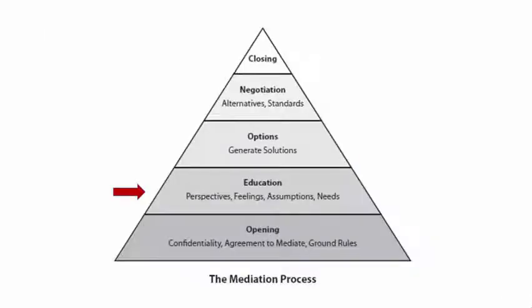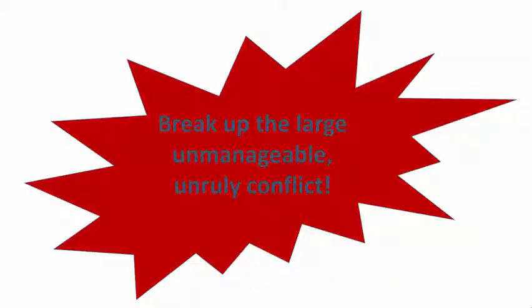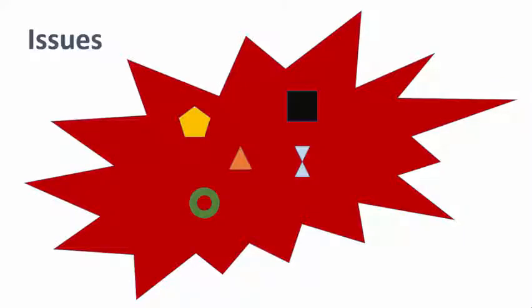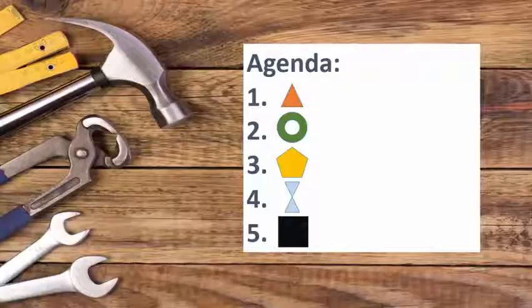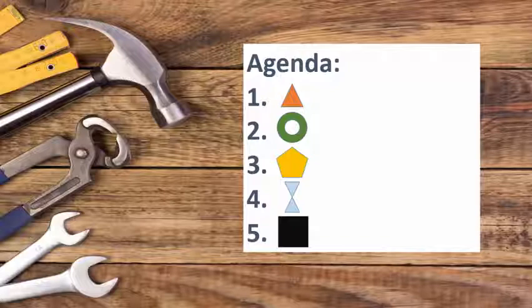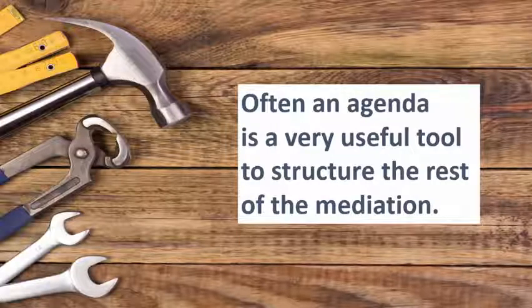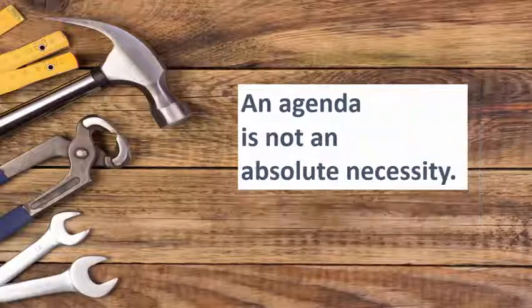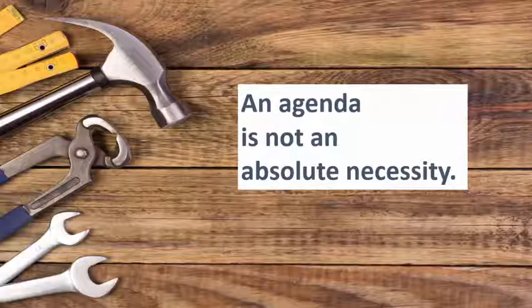Sometimes during the education phase it becomes apparent that breaking up a large, unmanageable conflict into smaller bite-sized pieces is a good idea. In conflict management we call these smaller pieces 'issues.' The benefit of breaking a conflict down — chunking or fragmenting it — is that it enables us to develop an agenda. An agenda is often a very useful tool to structure the rest of the mediation, but it is not an absolute necessity; it's something you may choose to do but don't have to do all of the time.